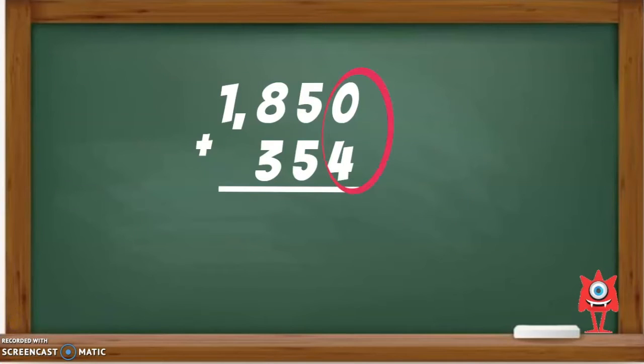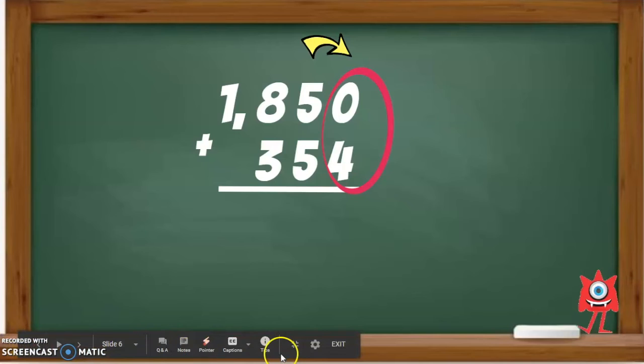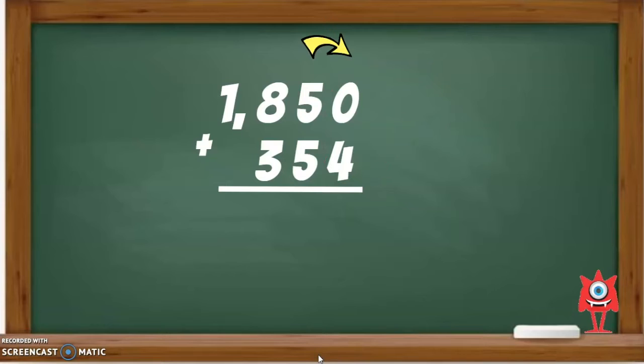We start by adding the digits in the ones place. 0 plus 4 equals 4. So, a 4 goes in the ones place of our answer. Now, we move to the tens place.